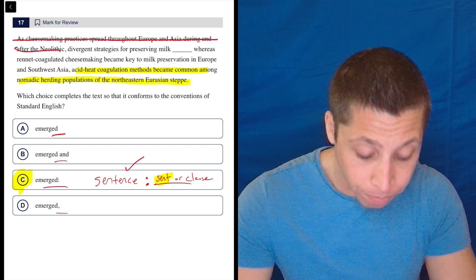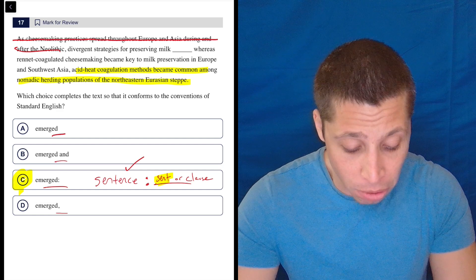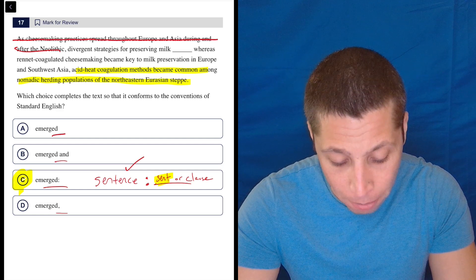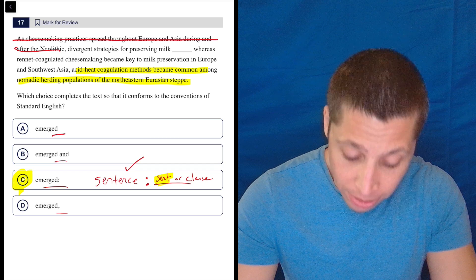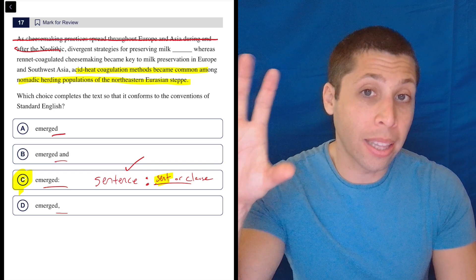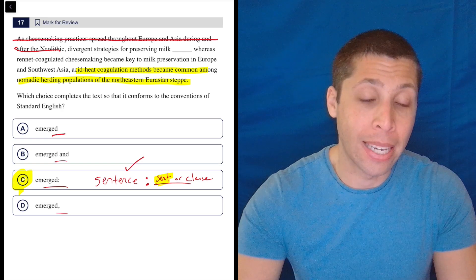say if we were writing this is something like: acid heat coagulation methods became common among nomadic herding populations of the northeastern Eurasian steppe, whereas rennet coagulated cheesemaking became key to milk preservation in Europe and Southwest Asia. So we would take that 'whereas' clause and pop it at the end.